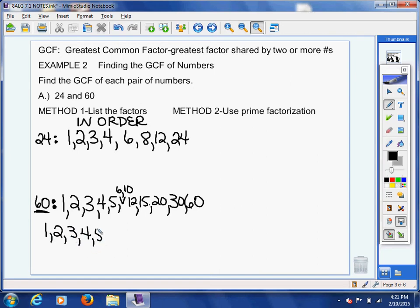7 doesn't work. 8 doesn't work. 9 doesn't work. And then we're repeating again with 10. So I just ran out a little bit of room here. But if I write it out a little bit neater: 1, 2, 3, 4, 5, 6, and then I bump to 10, 12, 15, 20, 30, and 60. So that's my list written out without any interruptions.